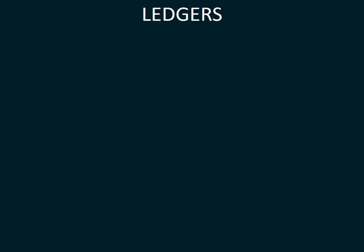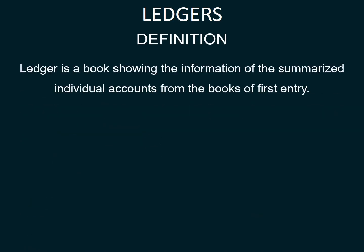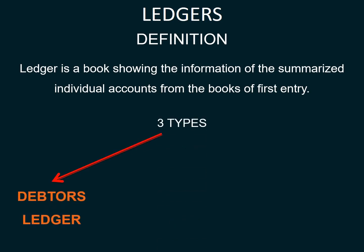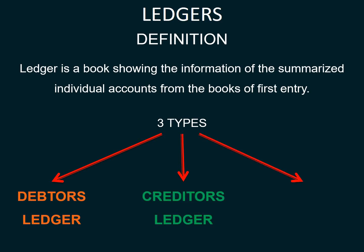We will focus on ledgers. A ledger is a book showing the information of the summarized individual accounts from the books of first entry. There are three types: the debtor's ledger, the creditor's ledger, and the general ledger.